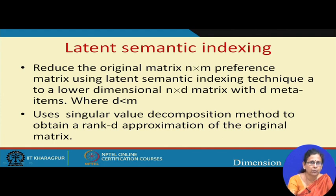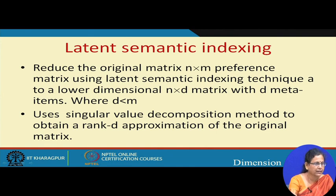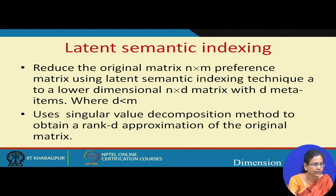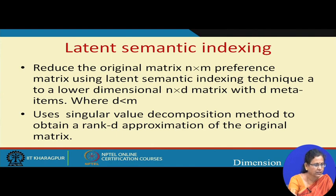There can also be further automatic methods like latent semantic indexing, where the dimension of the original matrix is reduced by finding the corresponding lower-dimensional equivalent matrix. Specifically, it uses singular value decomposition. This is just to let you know that such methods do exist.